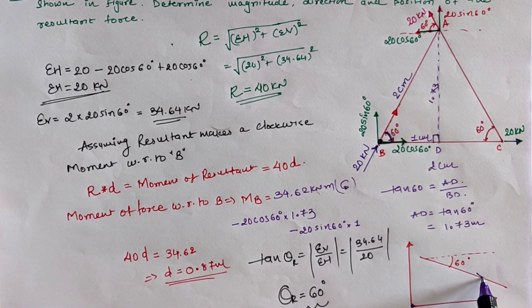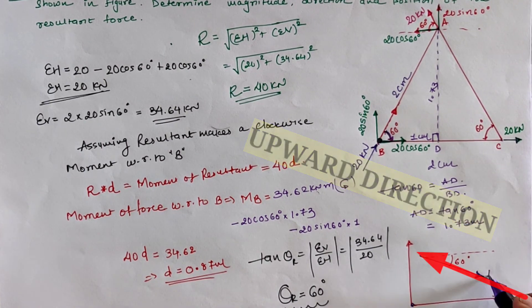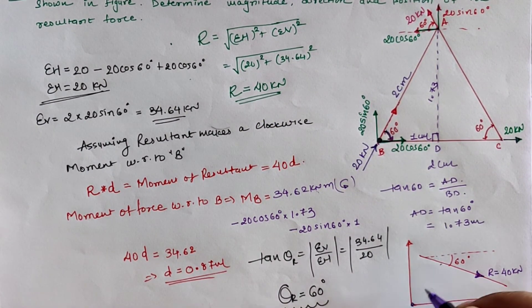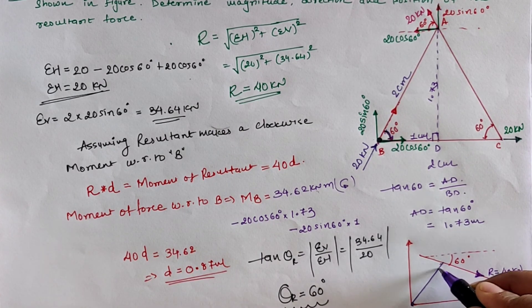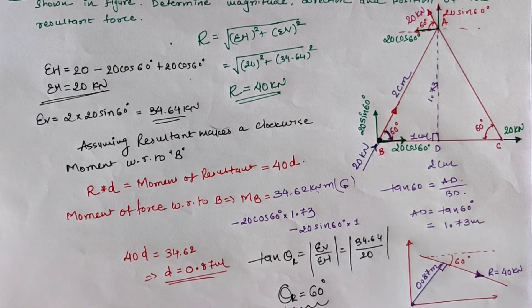The direction of the resultant is in the first quadrant at 60 degrees from the horizontal, and the perpendicular distance of the resultant with respect to B is 0.87 meters.